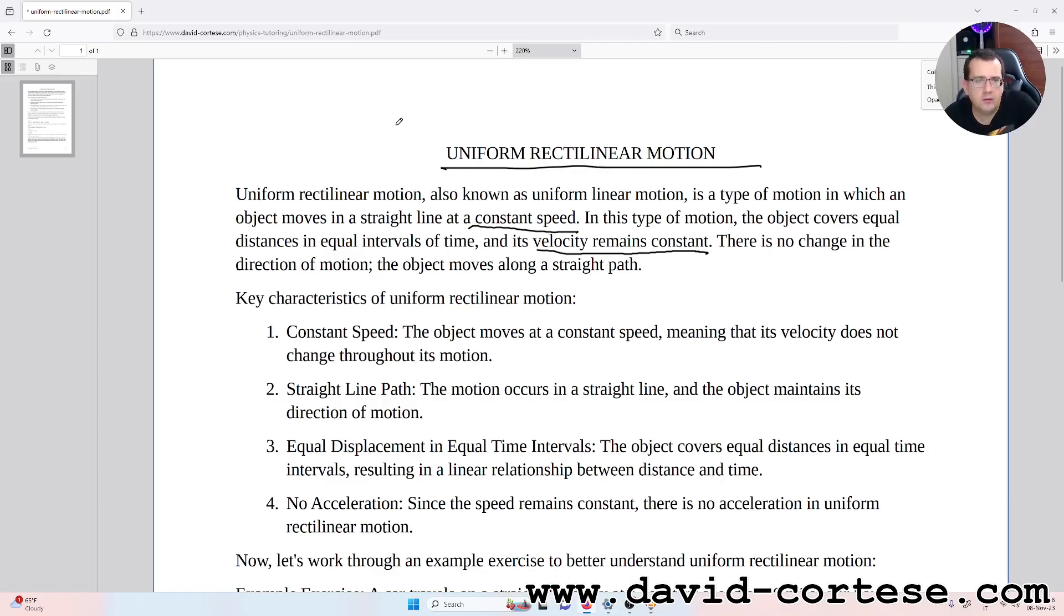Key characteristics of uniform rectilinear motion: constant speed. The object moves at a constant speed meaning that its velocity does not change throughout its motion.